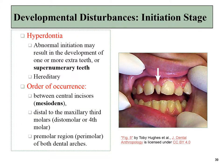On the other end, if neuromesenchymal stem cells proliferate too quickly and secrete morphogens in too many places, this can lead to hyperdontia — the formation of extra teeth. This can be genetic. One of the most common is a mesiodens, an extra central incisor between the two central incisors. An extra molar may form following the third molar, or an extra premolar may form.